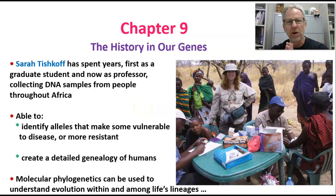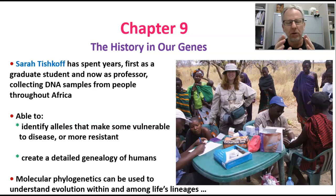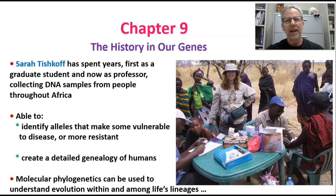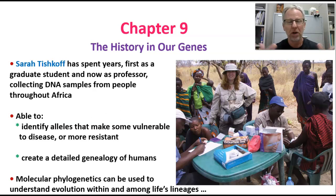Welcome to chapter 9, The History in Our Genes. This chapter focuses on molecular phylogenetics and understanding how genes evolve so that when we use genes in phylogenetic analyses, we understand the nature of the data and how we can use those genes to look at the history of anything from genes themselves to the history of populations, species, and higher taxonomic groups.